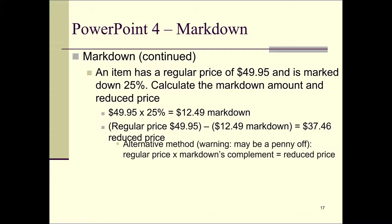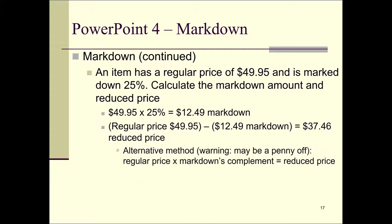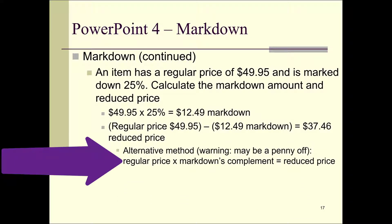One alternative way to do this is to take the regular price and multiply it by the markdown's complement. Here's a warning: it could be a penny off due to rounding, which is not a big deal in the real world, but on a test you might not want to use this shortcut method.